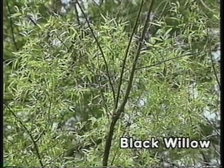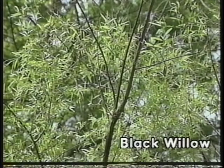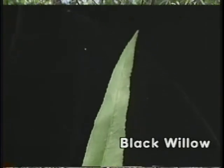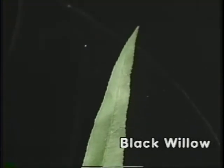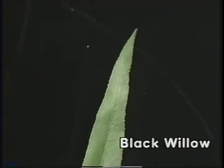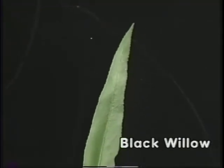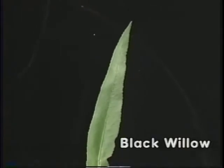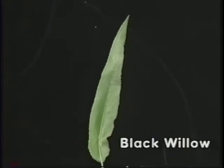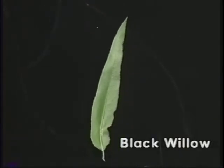The black willow is a simple leaf growing up to six inches, with an extremely narrow shape referred to as lanceolate. The upper surface of the leaf is light green in color. The margins are serrated.